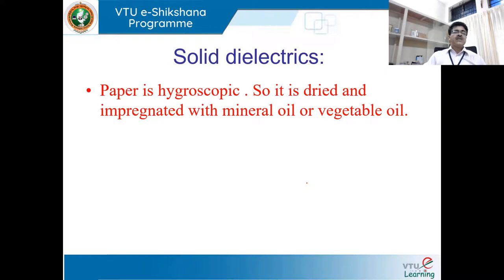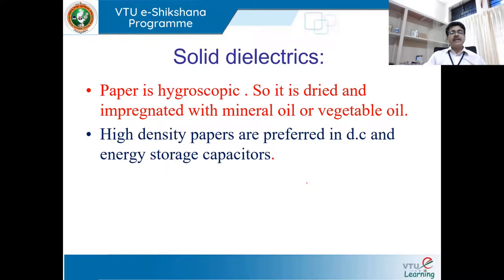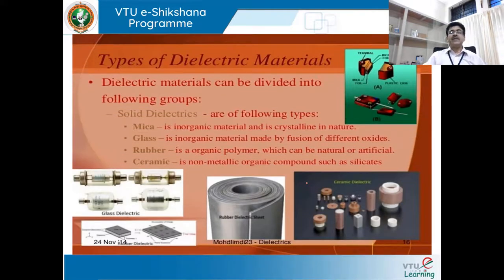Paper is hygroscopic, so it is dried and impregnated with mineral oil or vegetable oil before use as a dielectric in capacitors. High density papers are preferred in DC and energy storage capacitors. Mica is an inorganic crystalline material; glass is made by fusion of different oxides; rubber is an organic polymer; ceramic is a non-metallic inorganic component such as silicates. All these materials are used for various applications.